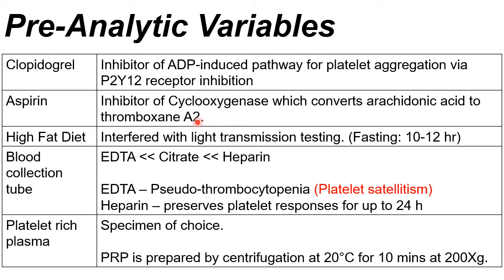Another variable is a high-fat diet. Cholesterol can interfere, especially in light absorbance methods. The patient should fast for about 10 to 12 hours. For the vacutainer being used, citrate is preferred, or heparin if available. EDTA is the least preferable vacutainer tube because it can cause pseudothrombocytopenia.